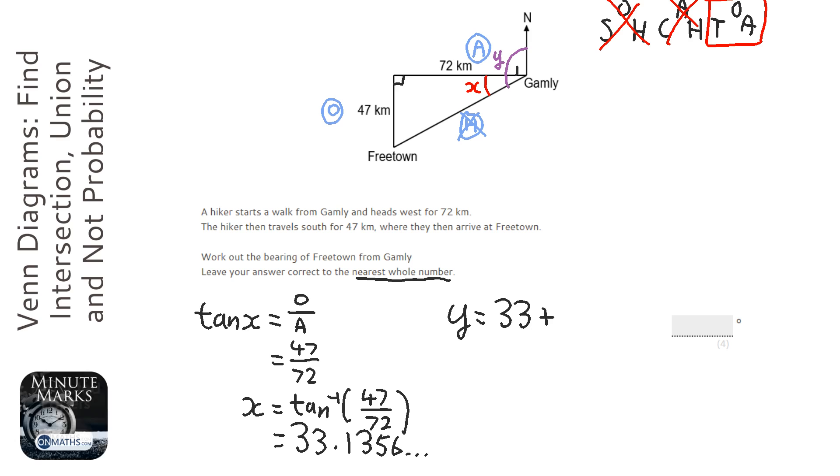And then we're going to add the right angle here. Now, the reason I know this is a right angle here is because it says that he heads west and then south. So I know that both the angle here and the angle here are going to be right angles, because the angle between all four, north, east, south, and west, all four directions are going to be right angles. So I'm going to add 90.